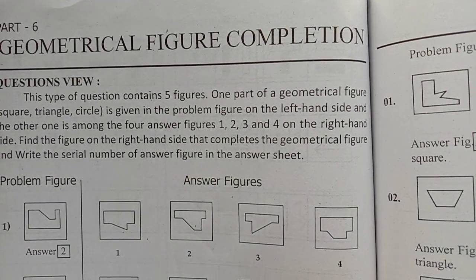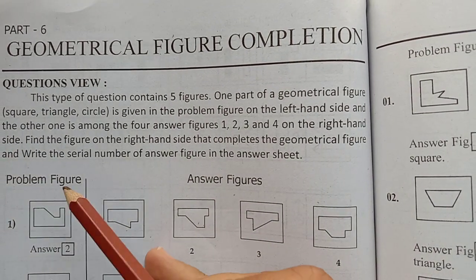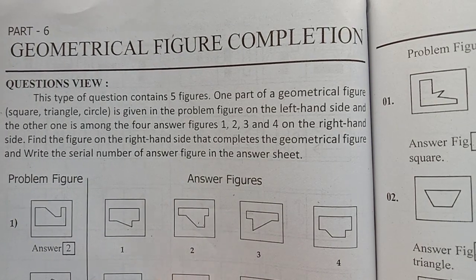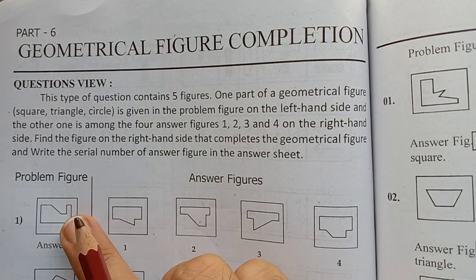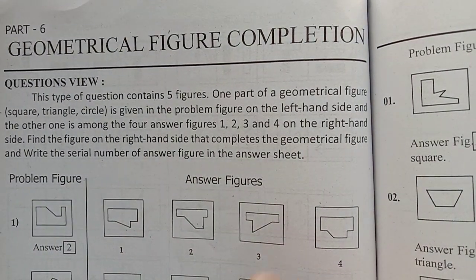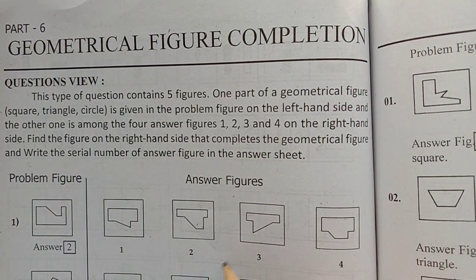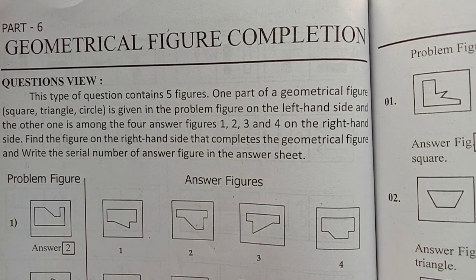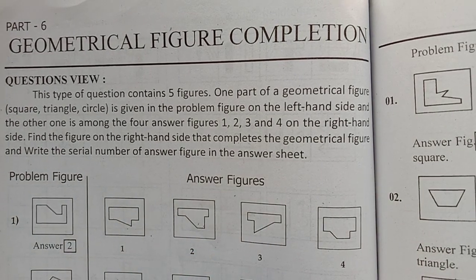Not only about the square — sometimes they may give a circle or triangle also. But the figure should be correct. The answer is the second one. Like this we have to check.